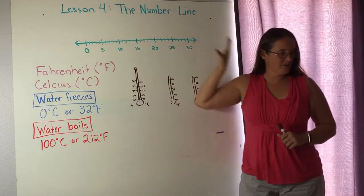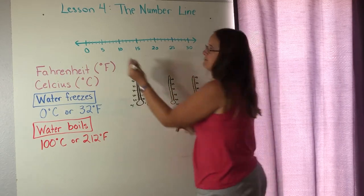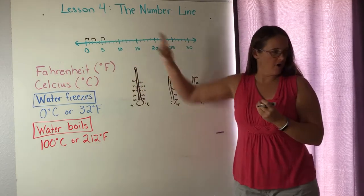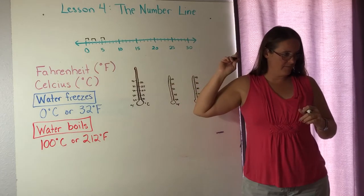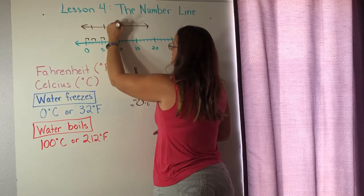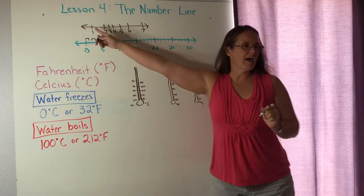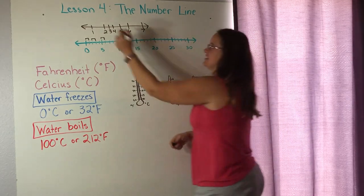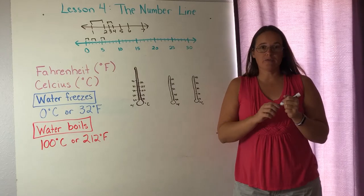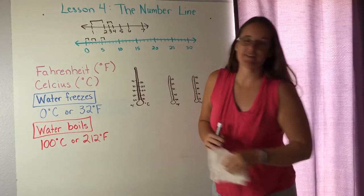Now there's something I want you to notice about this. Humans sometimes make errors. I didn't use a ruler so it might not be perfect. But all of these spaces are approximately the same distance apart. All my notches are the same. This is an accurate number line. If I made a number line like this and I said one, two, three, four, five, six, seven, that would not be an accurate number line.